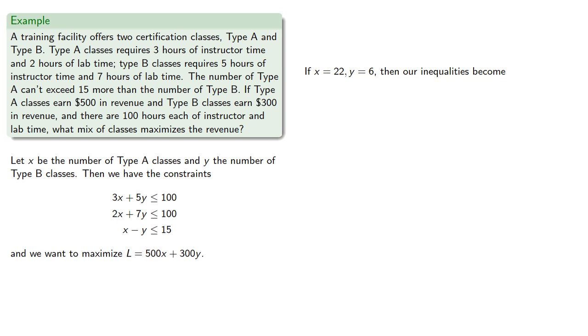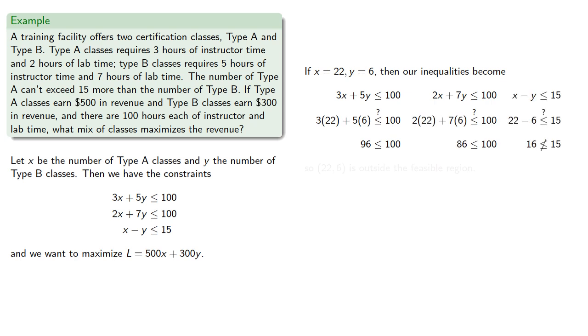If X equals 22 and Y equals 6, then our inequalities are, and one of them fails, so 22,6 is outside the feasible region.